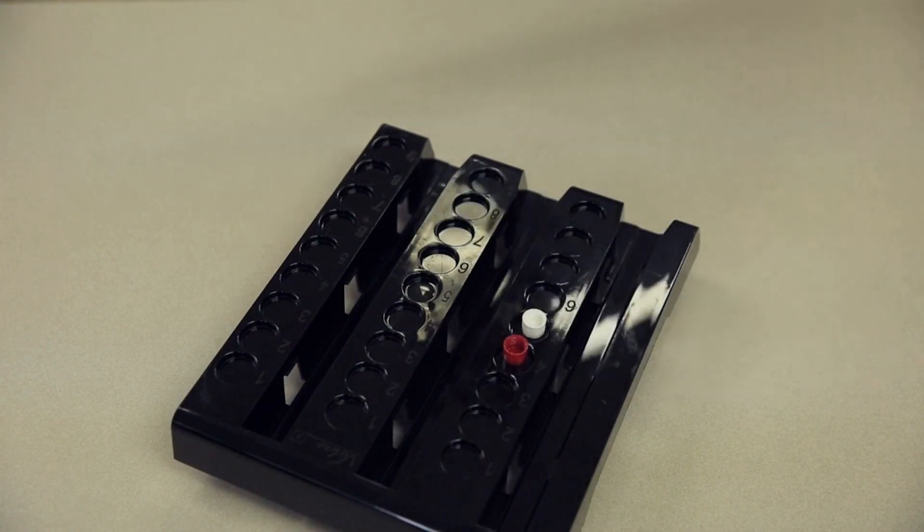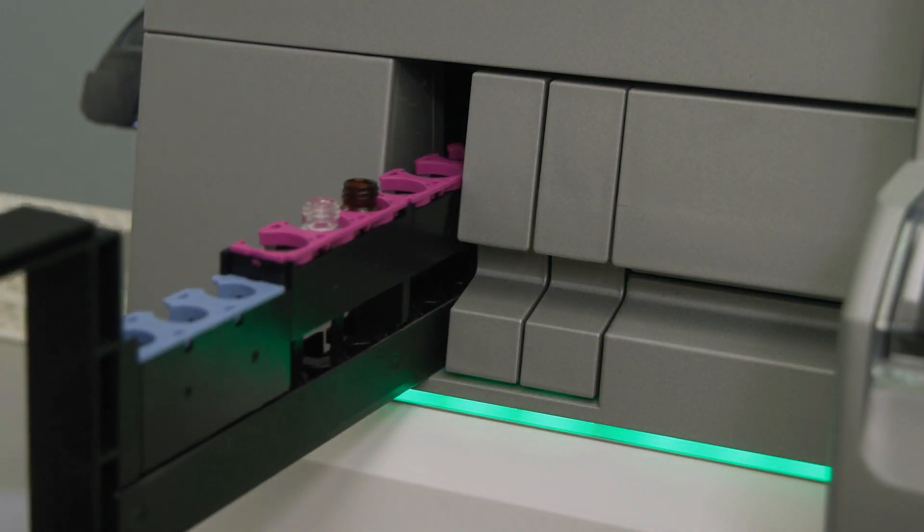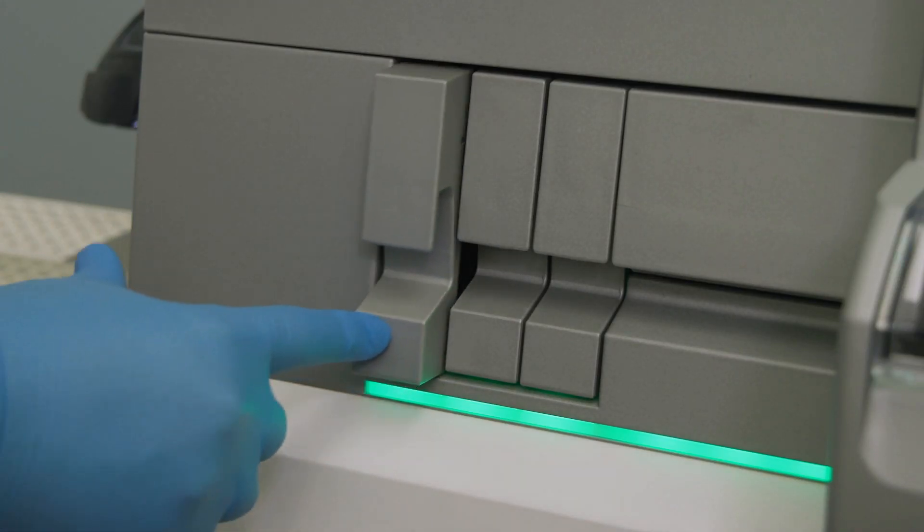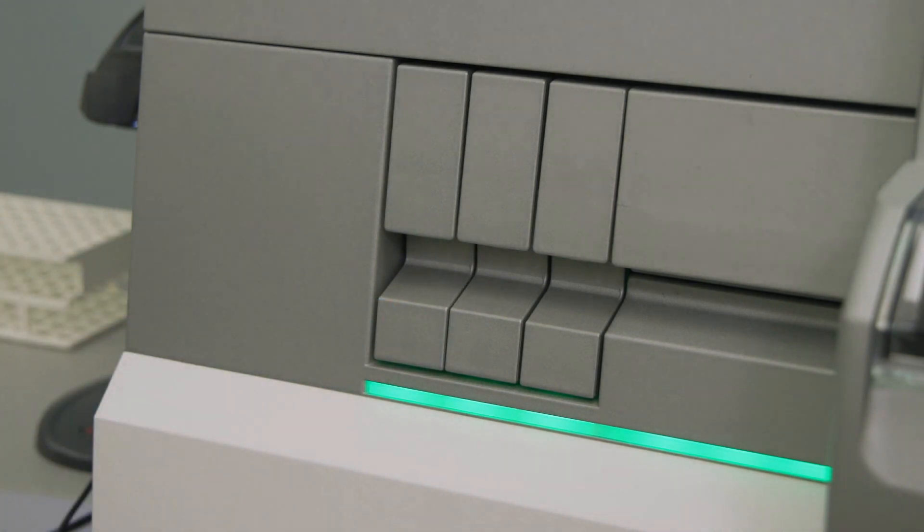Slide the rack out of the rack holder tray and insert it into the instrument loading bay. The barcodes on the rack segments and vials are read as the rack is pushed into the loading bay. Ensure that the rack securely clicks into place.